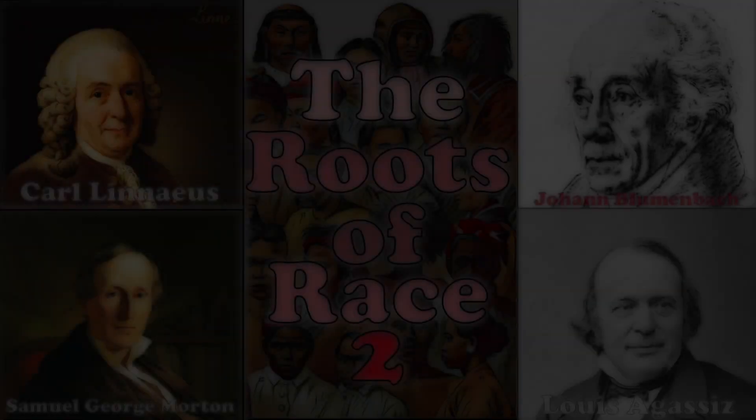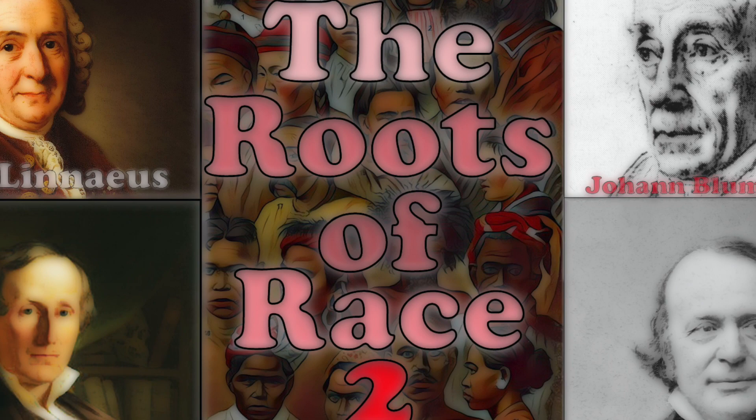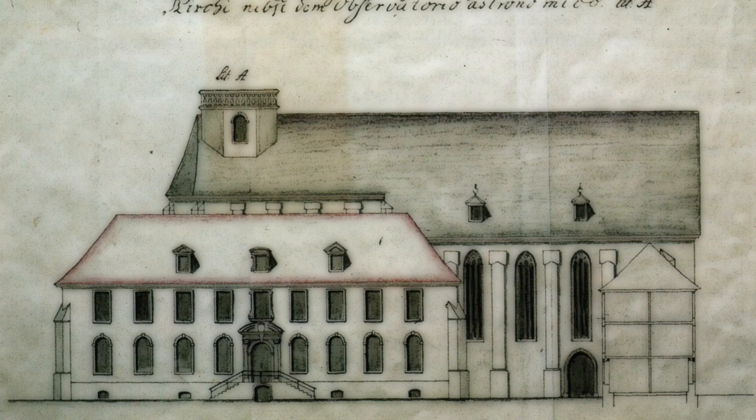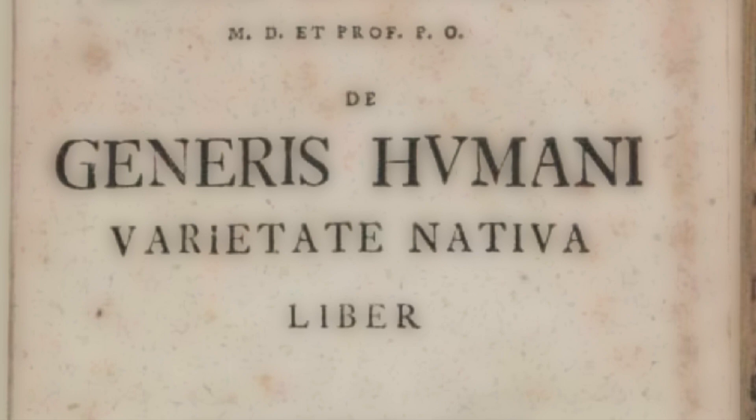Let me tell you a story. Let's begin today in the year 1775 in the country of Germany at the University of Göttingen. A young man studying medicine there in 1775 publishes his thesis called On the Natural Variety of Mankind.